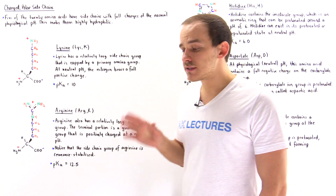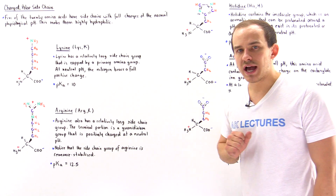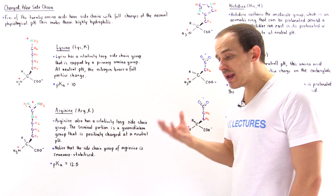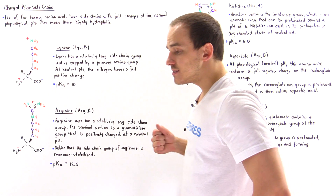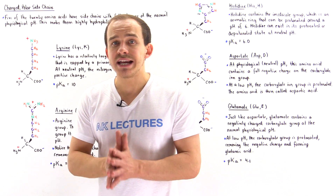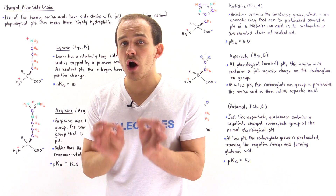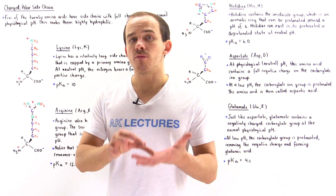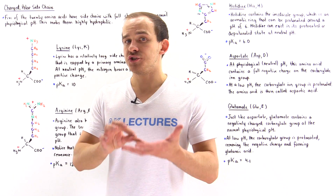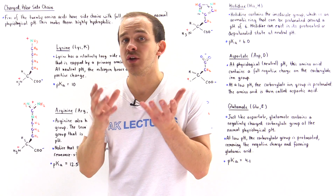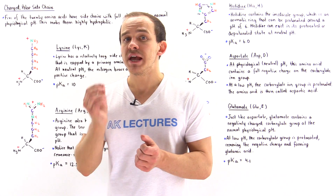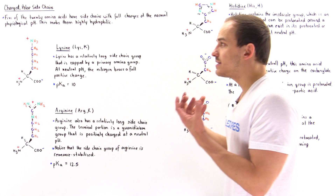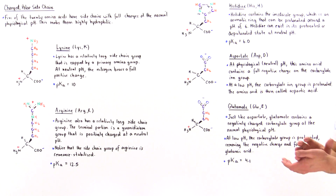Now let's discuss the 5 remaining amino acids. The special thing about these 5 remaining amino acids is they all contain a full charge on their side chain groups at the normal physiological pH, and that's exactly what makes them very highly hydrophilic, because they have that full charge.